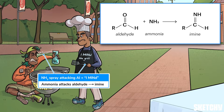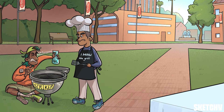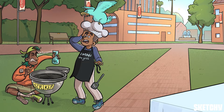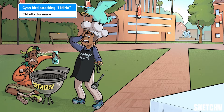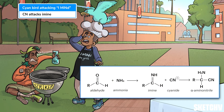See that 'I mind the grill' apron on the guy next to Al? He may be weirdly possessive of his hot dog flipping responsibilities, but he's also a nice reminder of imines. The guy who minds the grill is being attacked by a cyan bird because once an imine forms, its central carbon is attacked again, this time by cyanide, which is present in the reaction solution as either potassium cyanide or sodium cyanide.